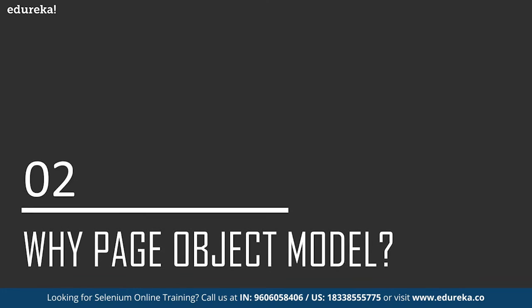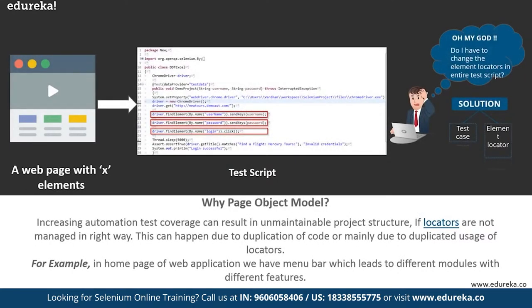Let's see why we need page object model. Increasing automation test coverage can result in an unmaintainable project structure if locators are not managed in the right way, mainly due to duplicated usage of locators. The chief problem with script maintenance is that if 10 different scripts are using the same page element, with any change in that element you need to change all 10 scripts, which is time consuming and error prone. A better approach is to create a separate class file which would find web elements, fill them, or verify them. This class can be reused in all scripts, and any future change in the web element only needs to be made in just one class file, making the code reusable, readable, and maintainable.